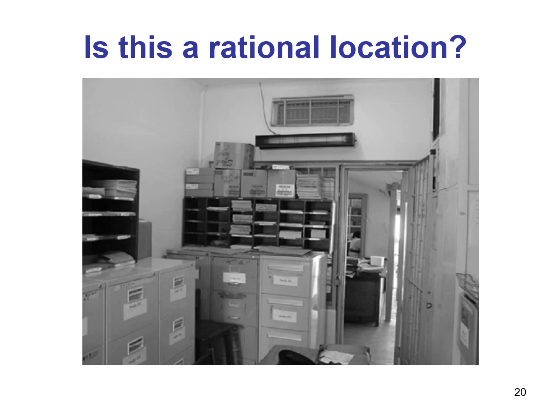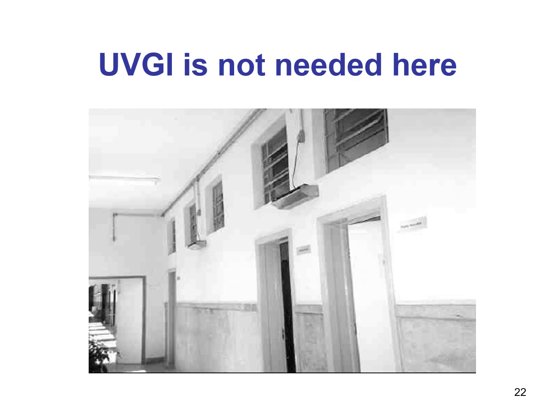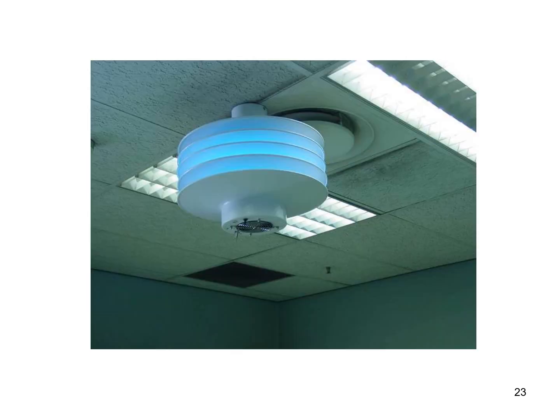Some real-life examples help assess whether UVGI is being used appropriately. An upper room UVGI device installed in a TB research room is not a rational location. A device installed in a recreation room with large windows on three sides does not need UVGI given the natural ventilation. Similarly, a device in a corridor with many large open windows is unnecessary. A UVGI device placed next to an exhaust fan is also improper — if air flows too fast, there is insufficient time for UVGI to irradiate the air.